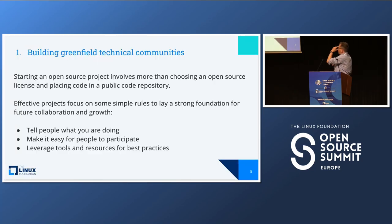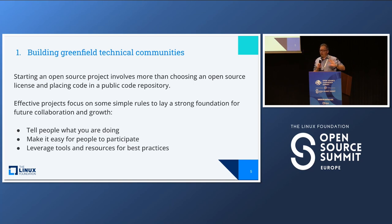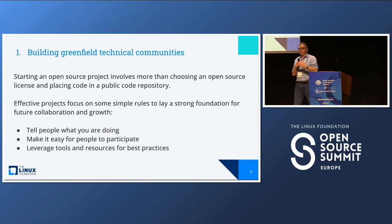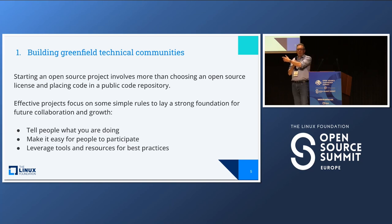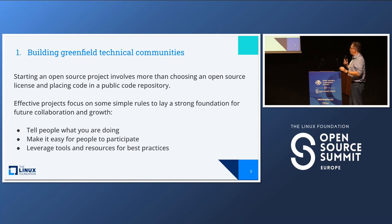Let's start with building greenfield technical communities. This is general guidance that, when followed well, can position a project for success. Of course you start an open source project — you've got to pick a license. For us, open means a license approved by the Open Source Initiative. Then put the code in a public repo — GitLab, GitHub. Effective projects will focus on some simple rules to lay a strong foundation for future collaboration and growth.